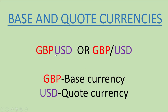Base and Quote Currencies. Let's use GBPUSD as our example. The first currency that appears in a pair, we call it the base currency. The second currency that appears in a pair, we call it the quote currency. If I anticipate that GBP will gain strength or will go up, it means that I will have to buy GBP while at the same time selling USD. And if I say GBP will lose strength and I need to make money out of it, it means that I will have to buy USD by selling GBP.